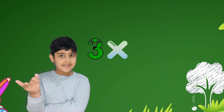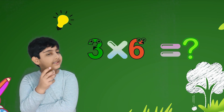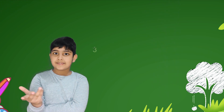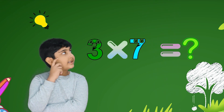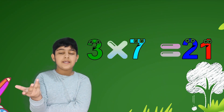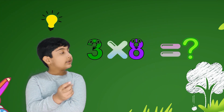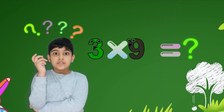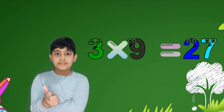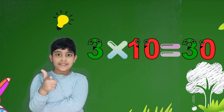3 sixes are 18, 3 sevens are 21, 3 eights are 24, 3 nines are 27, 3 tens are 30.